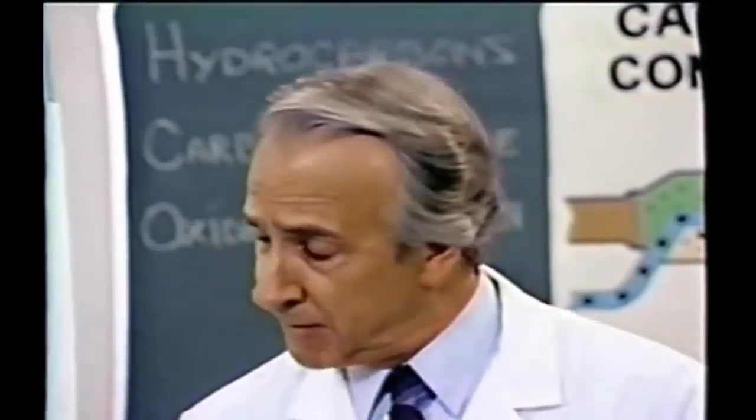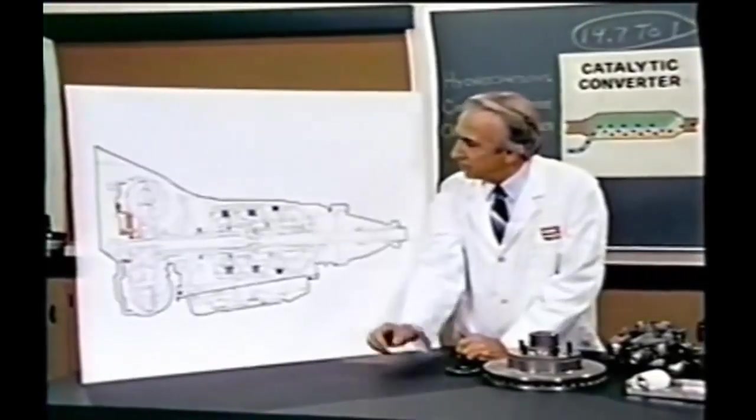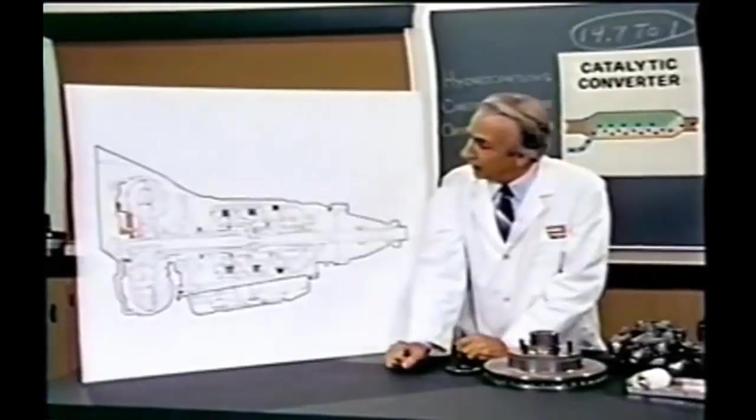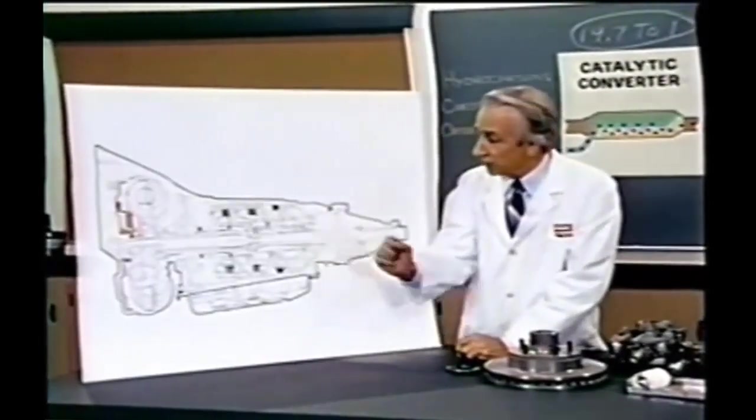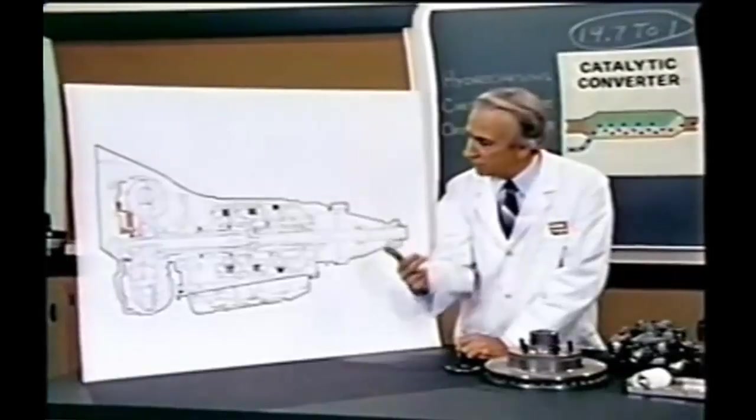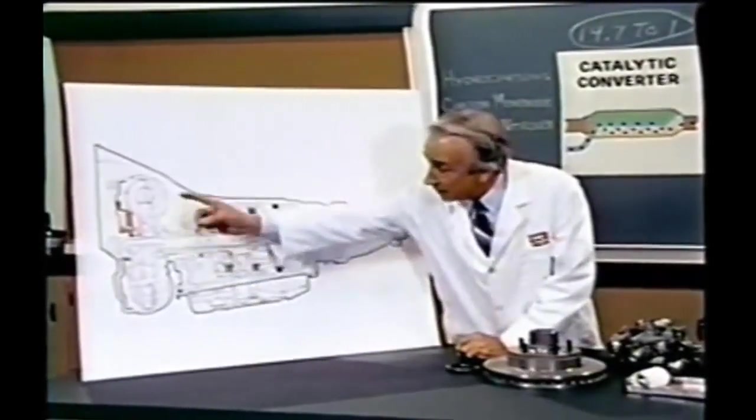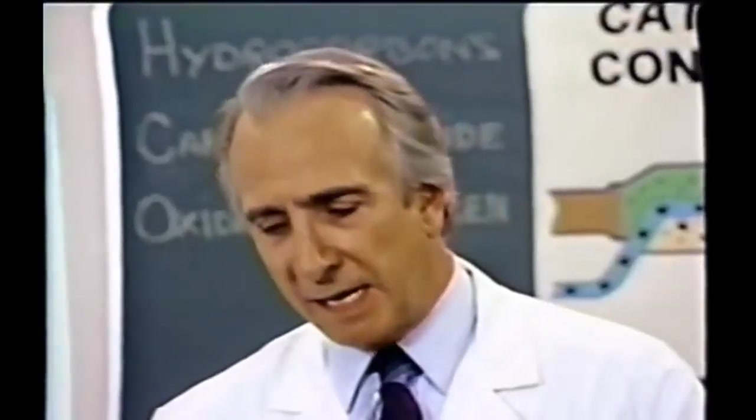The main winding was of the normal lotus or delta type placed in panendermic semi-boloid slots of the stator, every seventh conductor being connected by a non-reversible tremie pipe to the differential girdle spring on the up end of the grammes. The turbo-encabulator has now reached a high level of development and it's being successfully used in the operation of novertrunnions.